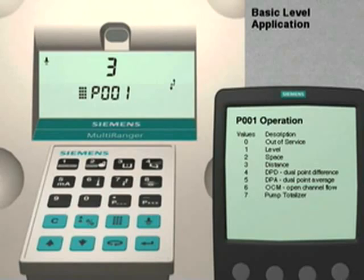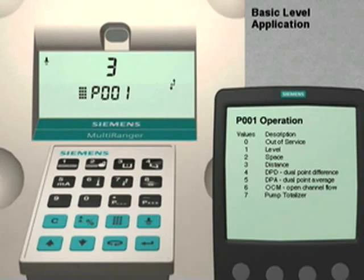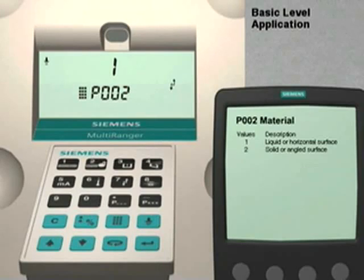For our application, we want to measure the level, or in other words, the height of the liquid in the vessel. According to the manual, parameter 1 for a level measurement should be set to a value of 1. To do this, simply push the number 1 key followed by the Enter key. To go to the next parameter, press the up arrow key.